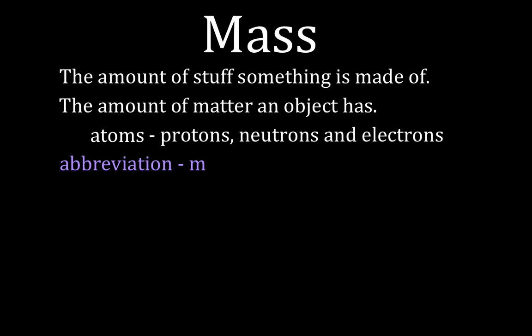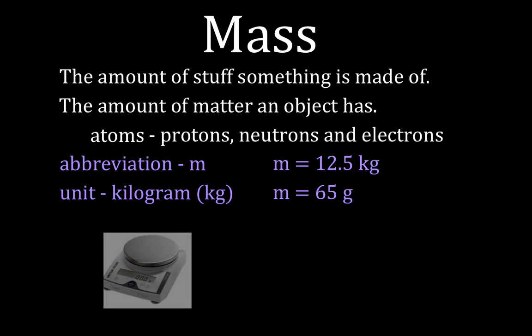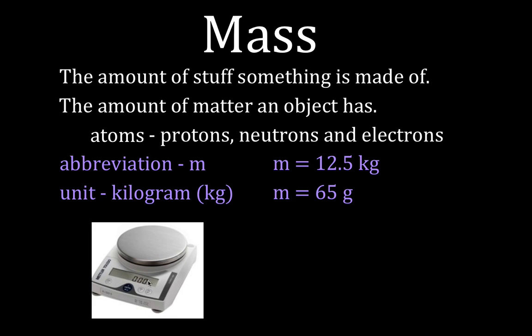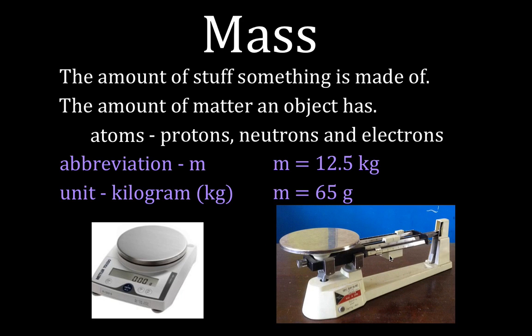The abbreviation for mass is M. The base unit is the kilogram, but usually in class we don't have a kilogram of something — we often use grams. We can say the mass of something is equal to 12.5 kilograms, or for example 65 grams. Here's an electronic balance we use to measure mass in grams. You can also have a mechanical balance — this is known as a triple beam balance, and you can see it has three beams.